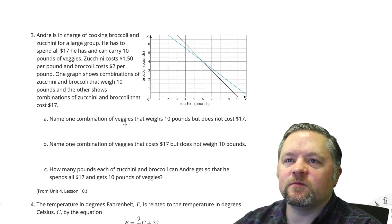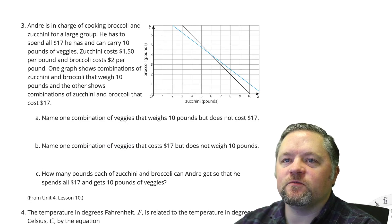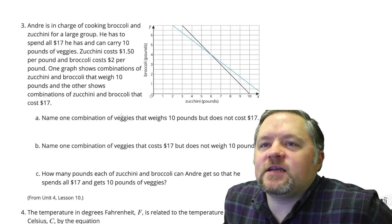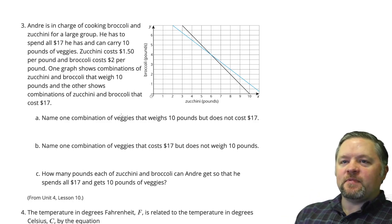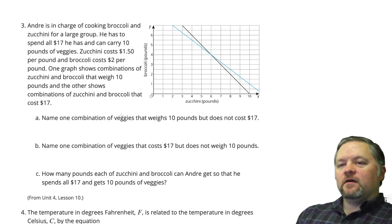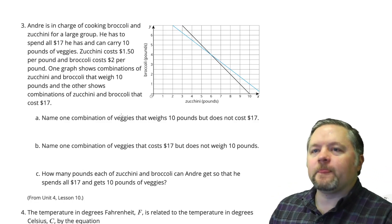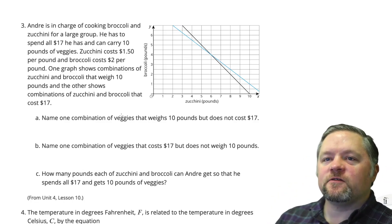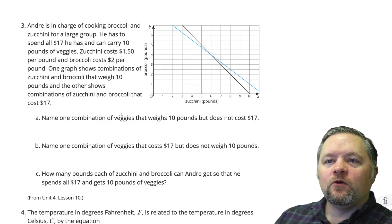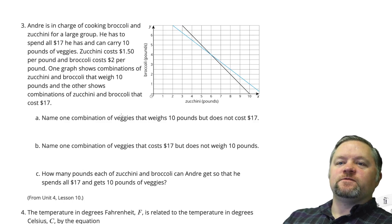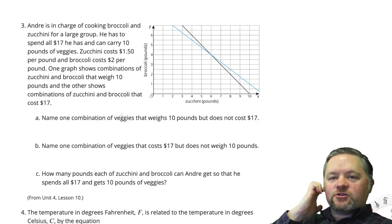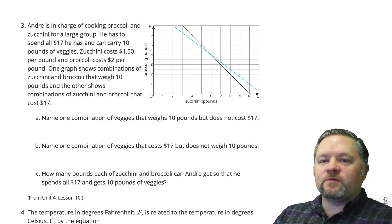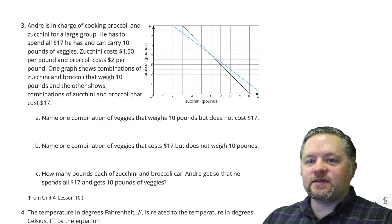Andre is in charge of cooking broccoli and zucchini for a large group. He has to spend all $17 he has and he can carry 10 pounds of veggies. Zucchini costs $1.50 per pound and broccoli costs $2.00 per pound. One graph shows the combinations of zucchini and broccoli that weigh 10 pounds; the other shows the combinations that cost $17.00.